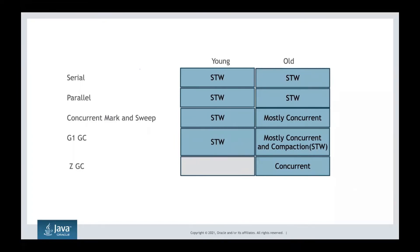Now we come to ZGC, where we do everything concurrently — it is almost a pauseless garbage collector. The ZGC team claims pause times less than 10 milliseconds in any situation. Since pause time is very low, there is no need to follow the weak generational hypothesis. In ZGC, we scrapped the concept of young and old generations — there is only one generation, and everything is done concurrently.